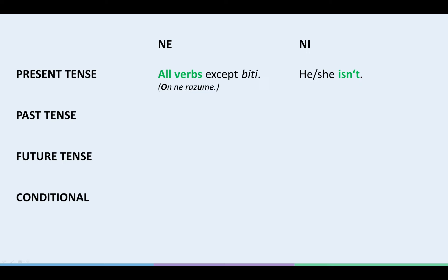We use NI in the present tense ONLY for HE, SHE, so in the meaning of HE, SHE IS NOT. For example, ON NI USPEŠEN. HE ISN'T SUCCESSFUL.